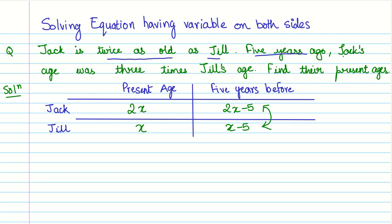We are given that five years ago, Jack's age was three times Jill's age. Which means Jack's age five years ago was 2X minus five. And Jill's age at that time was X minus five. But to make it equal, it was three times of Jill's age. So this is the equation that we have. And you can see that we have come up with an equation that has a variable on both these sides.